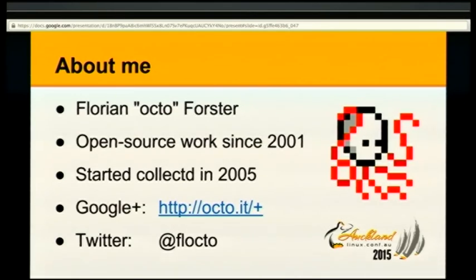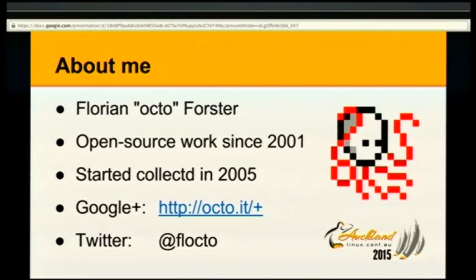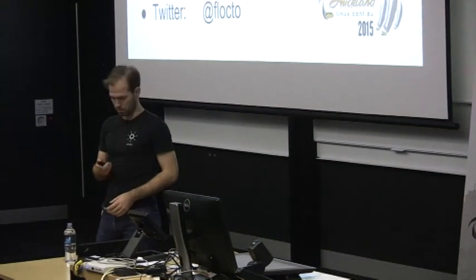My name is Florian Forster. People tend to call me Octo because Florian is a common name in my age group in Germany. I've been doing open source work for a while. I started some Pearl hacking in 2001. In 2005 I started the CollectD project and I've been hacking on stuff ever since, mostly infrastructure and back-end stuff, so I'm not a GUI person. I have a Google Plus profile and I'm on Twitter as well.